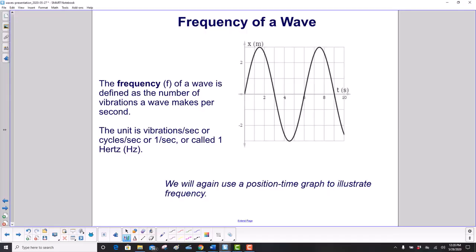The frequency of a wave—and that's labeled f (other texts will label it with the Greek letter nu)—is defined as the number of vibrations a wave makes per second. The unit is vibrations per second, or cycles per second, or one over second, and it's actually called Hertz, capital H little z. We will again use a position-time graph to illustrate frequency.